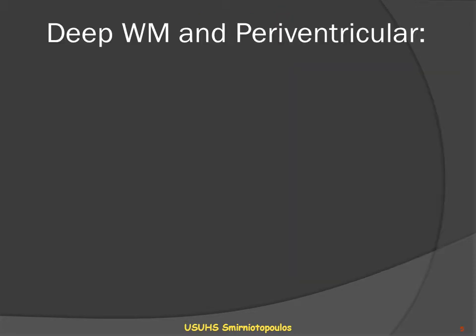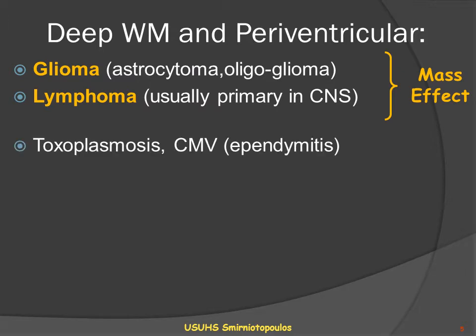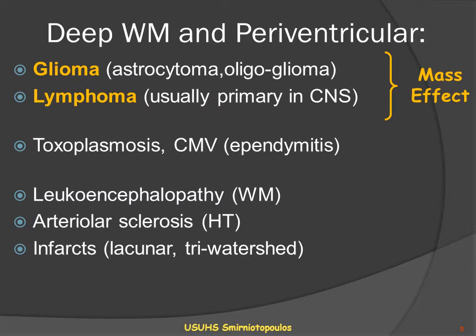This is the classic appearance for an infiltrating neoplastic process, such as primary CNS lymphoma or glioblastoma multiforme, both of which are well known to be butterfly lesions. Let's think a little bit more about deep white matter and periventricular lesions. Gliomas, astrocytoma, oligoastrocytoma, and lymphoma — usually primary lymphoma in the central nervous system — are the classic lesions that expand by infiltrating the corpus callosum. Toxoplasmosis and CMV may involve the ependymal lining of the ventricle in the periventricular area, and various types of white matter disease or leukoencephalopathy, small vessel disease or arteriolar sclerosis, and infarcts that may be the result of hypertensive vascular disease may also involve the periventricular region in the corpus callosum.